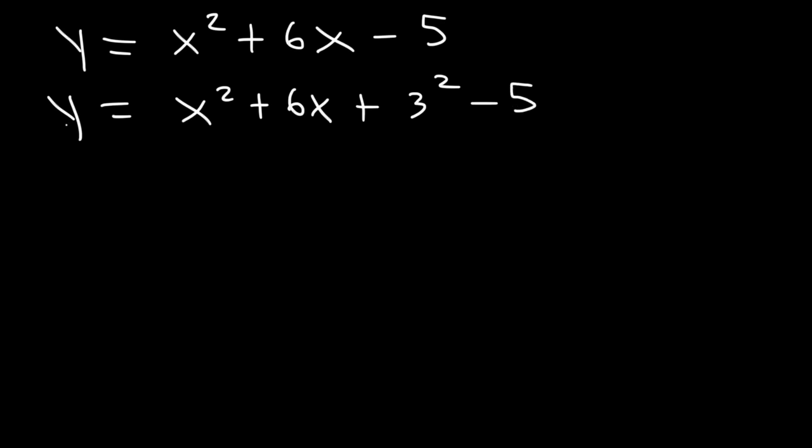Adding it to the left side is the same as subtracting it from the right side. So we can add 3 squared to both sides, or we can add 9 to the right side and simultaneously subtract 9 from the right side. 9 and negative 9 is 0, so we're not changing the value of the right side. So let's do it that way.